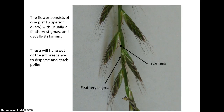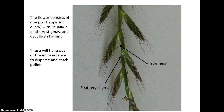In any case, since they are wind-pollinated, at some point when the flowers are actually in the flowering state, you will see the three stamens dangling out of the inflorescence — three stamens per flower — and the feathery stigmas also hanging out so they can catch the pollen as it drifts through the air.